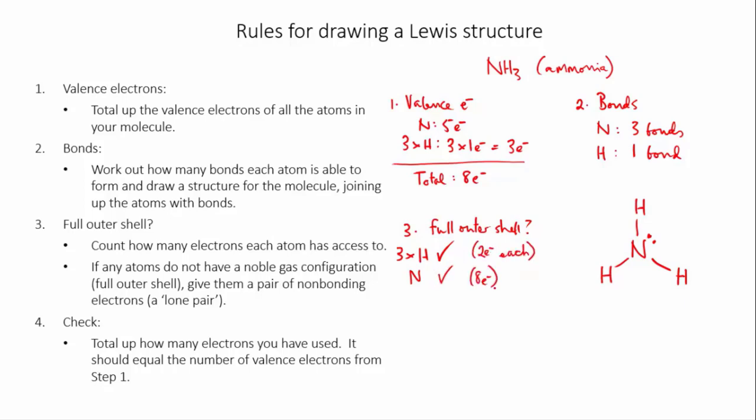The final step is to do a check. The point is that when you draw a Lewis structure, the number of electrons that you represent in the Lewis structure, by bonds and lone pairs, must equal the number of valence electrons that you started off with. So for ammonia, we determined at the beginning that there were eight valence electrons that we could play with. So when we've finished drawing our Lewis structure, we need to check that we have actually used exactly eight electrons.